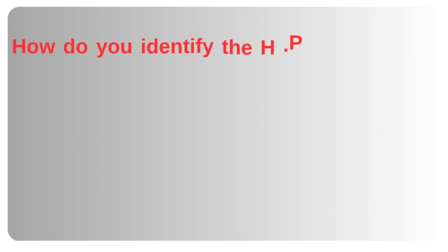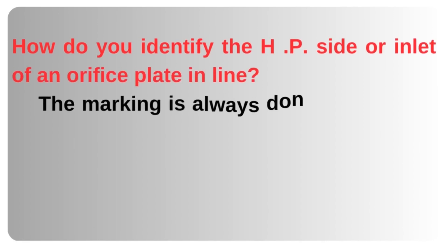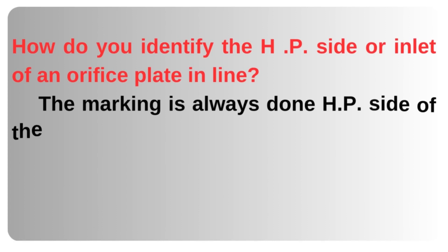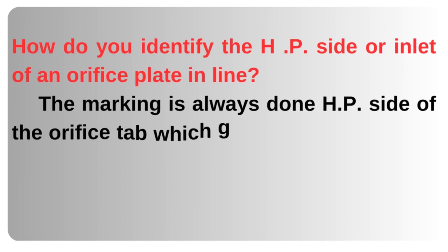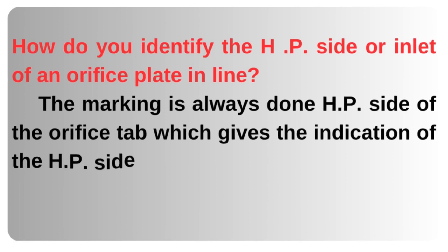How do you identify the high pressure side or inlet of an orifice plate in line? The marking is always done on the high pressure side of the orifice tab, which gives the indication of the high pressure side.